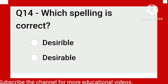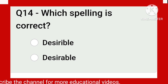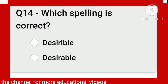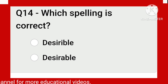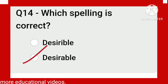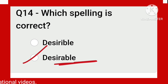Which is the correct spelling? If you know the spelling of 'desire,' you can correctly judge this one. Desirable: D-E-S-I-R-A-B-L-E. It is not 'desireable' — desirable. So the one with A-B-L-E is the correct spelling.